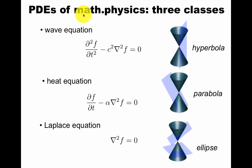The PDEs of mathematical physics fall in three classes. The wave equation with wave speed c, the heat equation with thermal coefficient alpha, and the Laplace equation which is just nabla squared f.